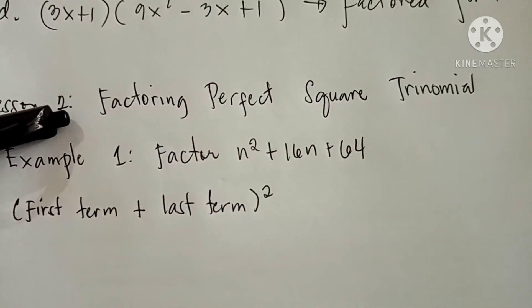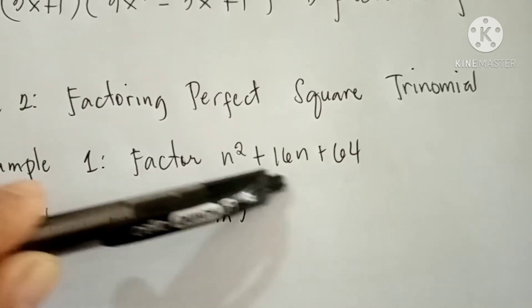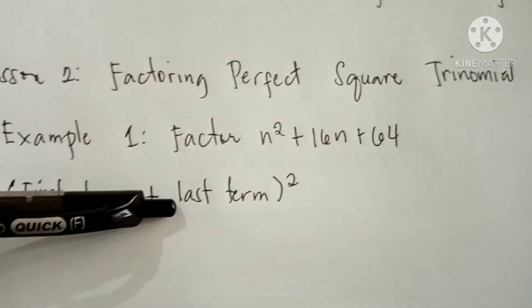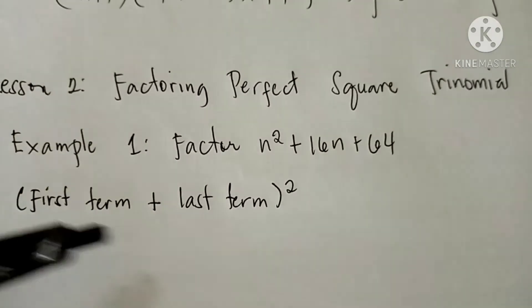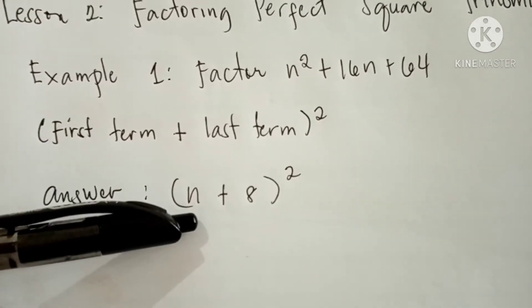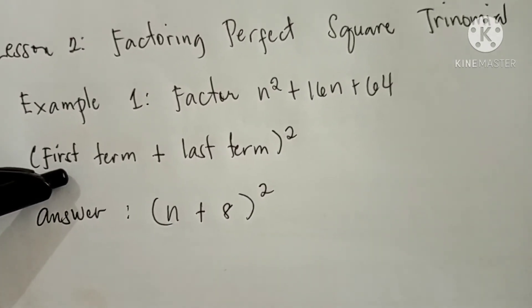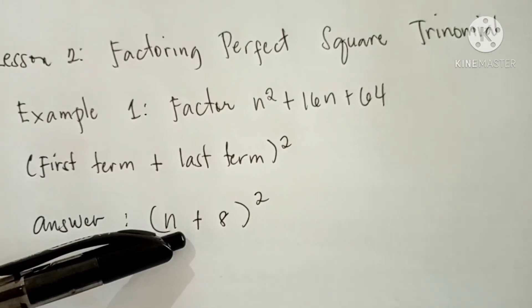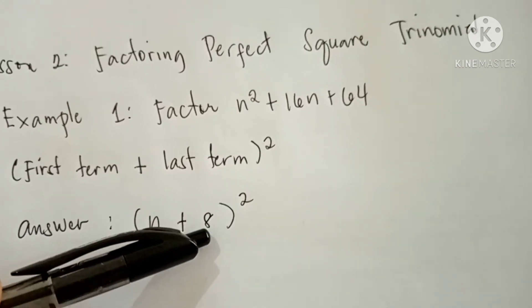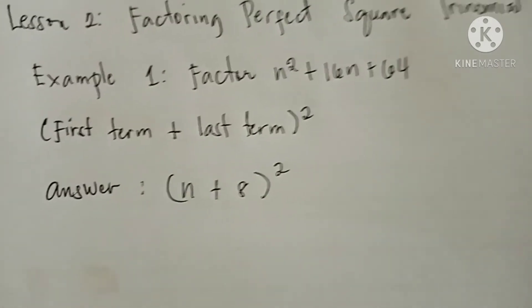Factoring perfect square trinomials is very easy. Get the square root of the first term plus the square root of the last term, then raise the quantity to the power of 2. For example, with n squared plus 16n plus 64: the square root of n squared is n, and the square root of 64 is 8. So the answer is (n + 8) squared.